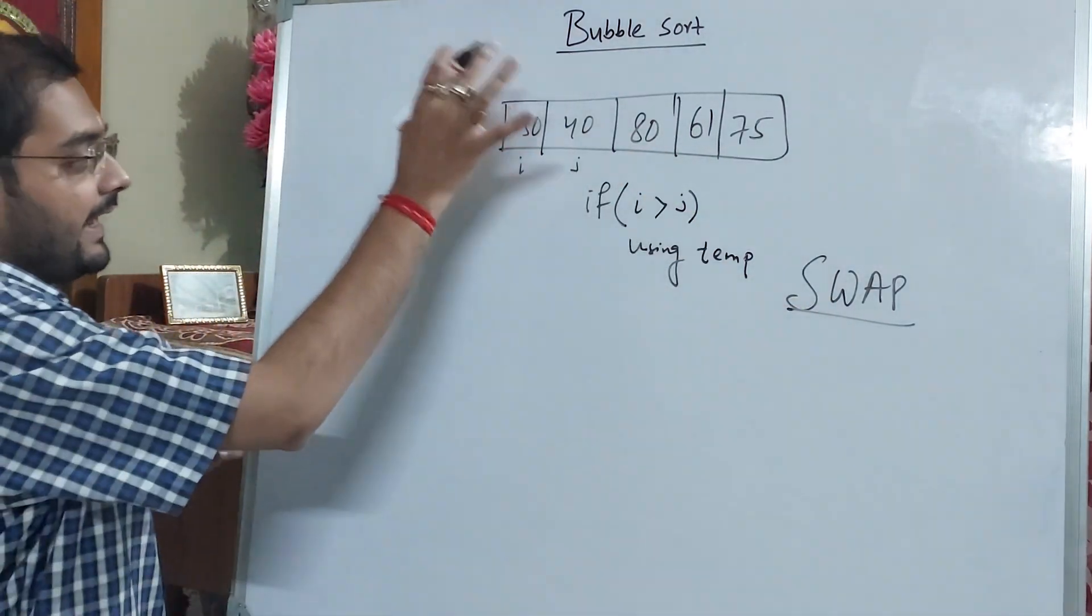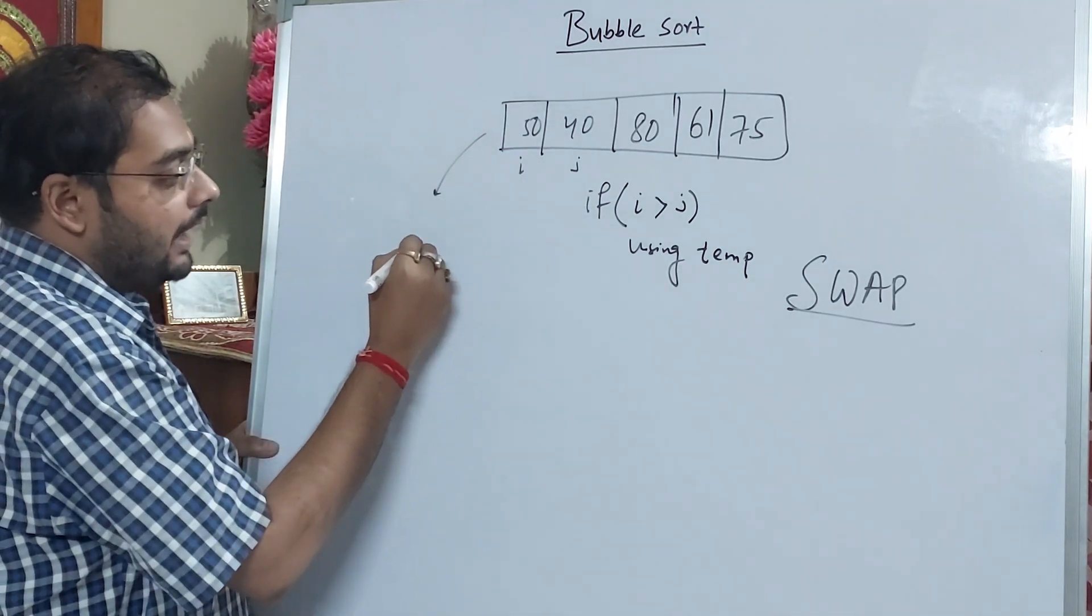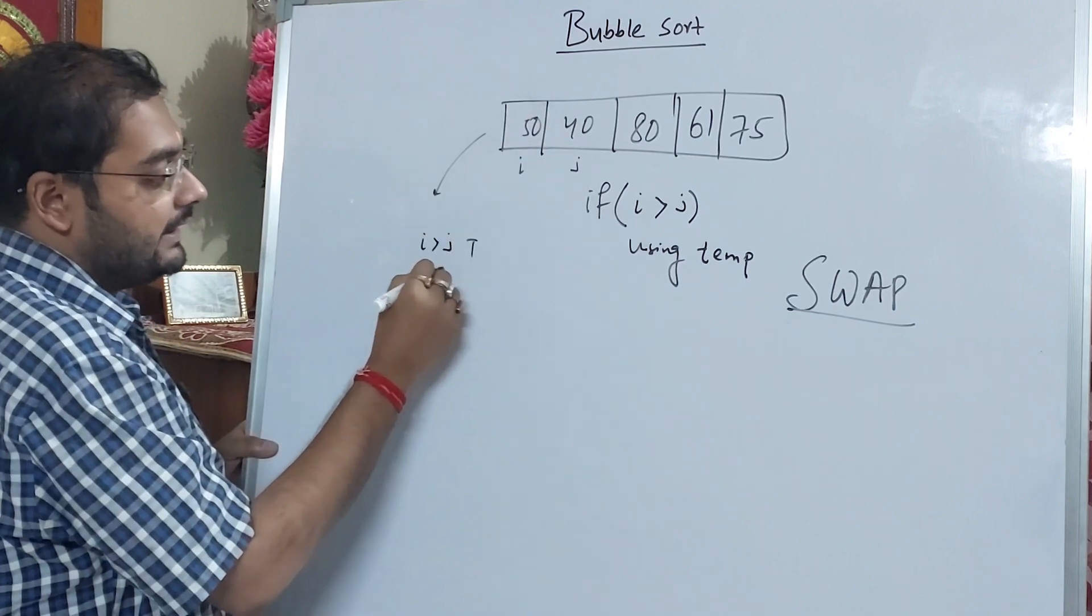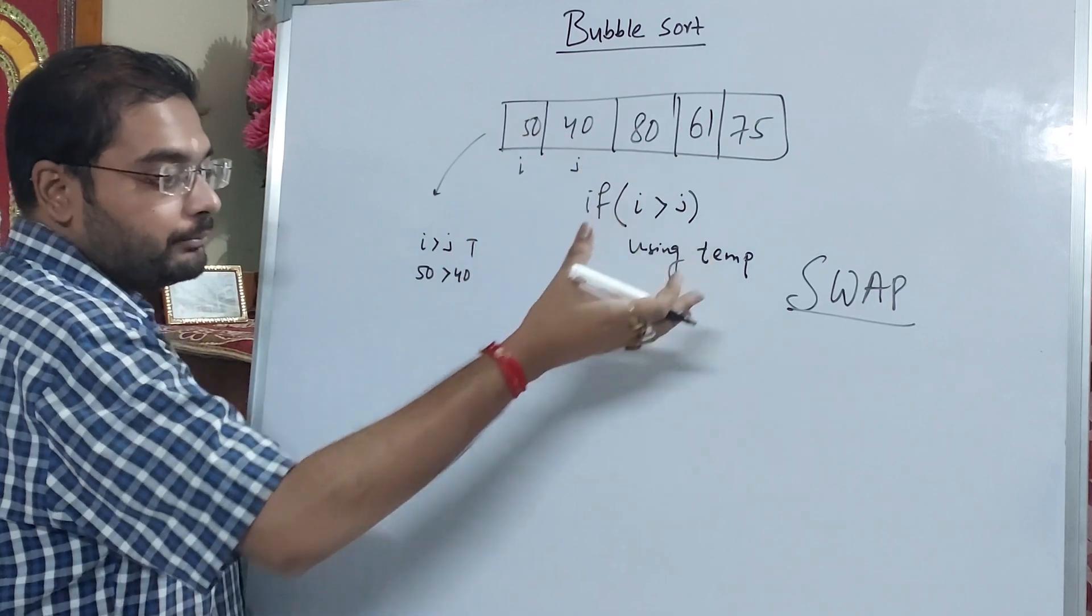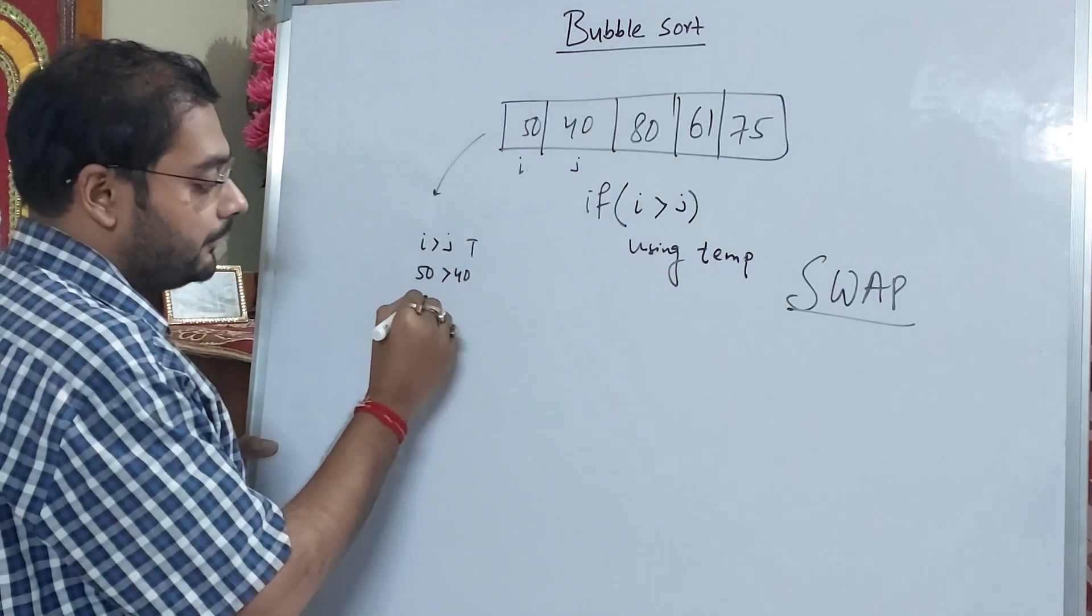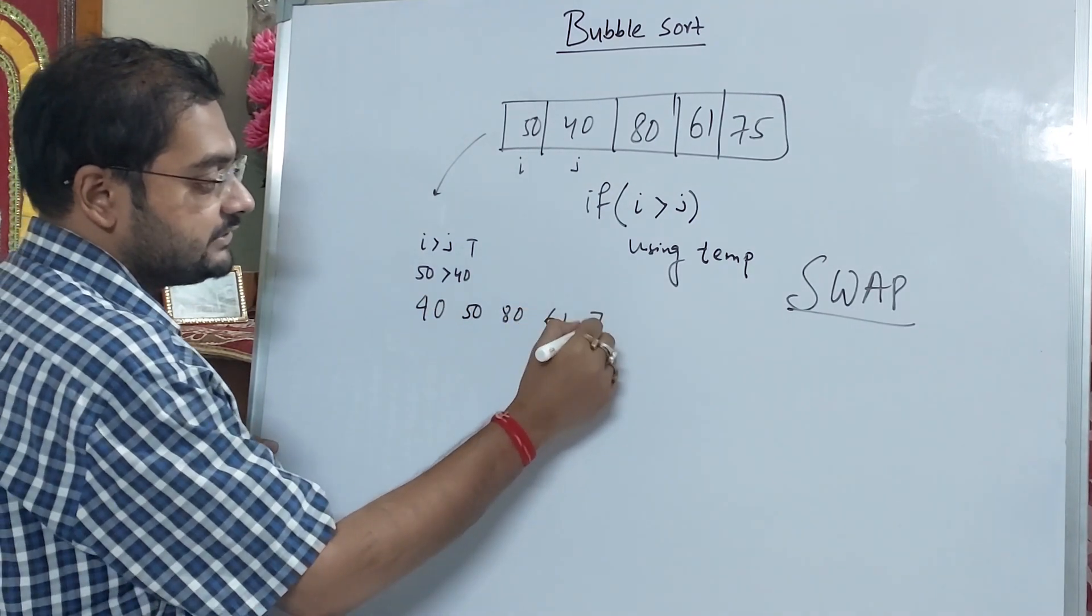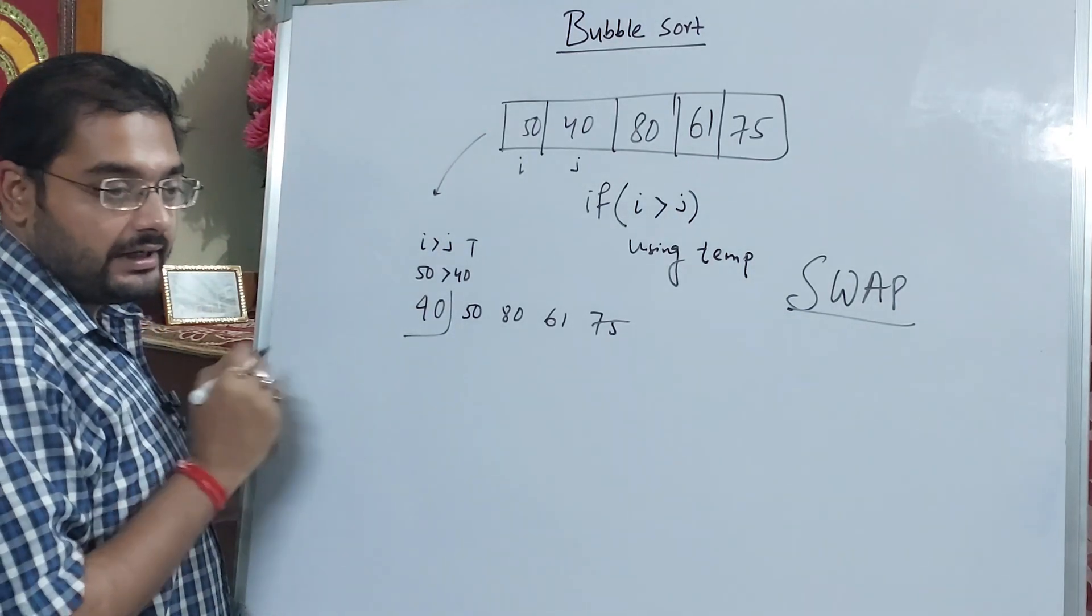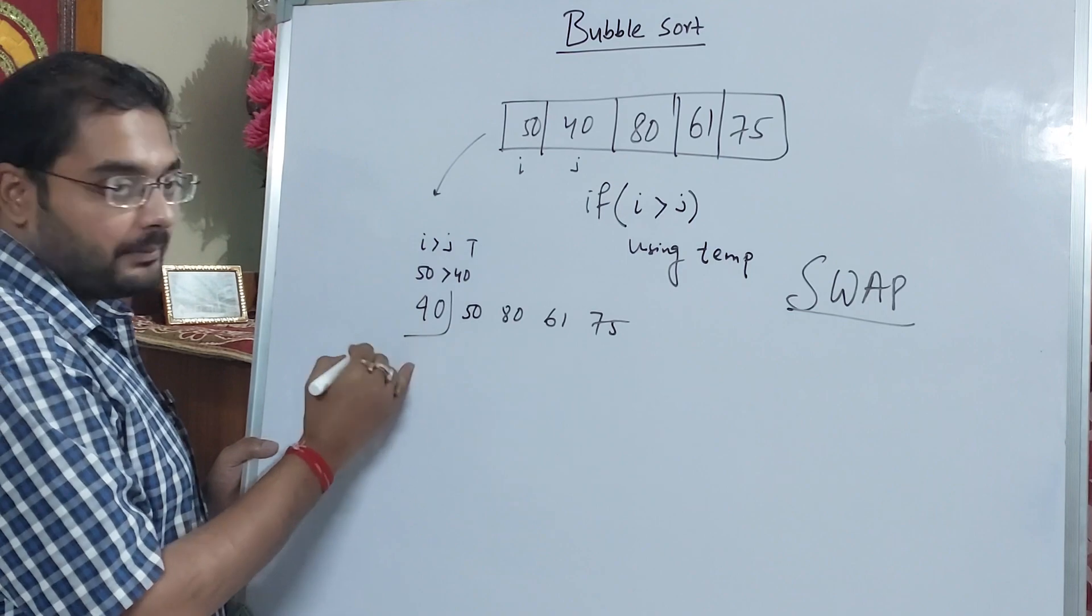Simple. So what do we do? First, we can see this. If I is greater than J, see: 50 is greater than 40. True. So what do we do? Using a temporary variable, we can do swapping. After swapping, it becomes 40, 50, 80, 61, 75. Simple. We can see that this number is sorted.